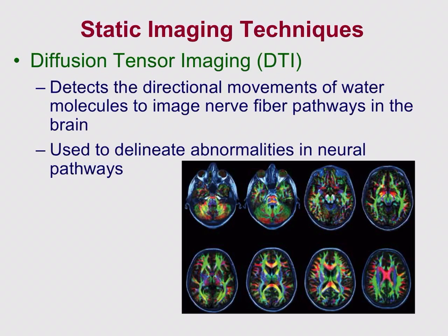Diffusion tensor imaging (DTI) is really cool because it shows nerve fiber pathways by looking at the directional movement of water molecules. It produces striking rainbow-colored images of specific fiber tract pathways — you can see structures like the corpus callosum very clearly. If a person has issues with motor balance, DTI can reveal very specific nerve fiber pathways that have been damaged — something harder to detect with standard MRI. It's particularly helpful in finding abnormalities in neural pathways.